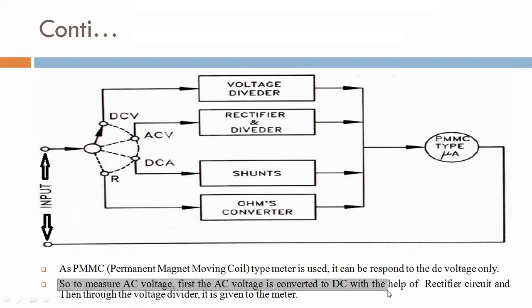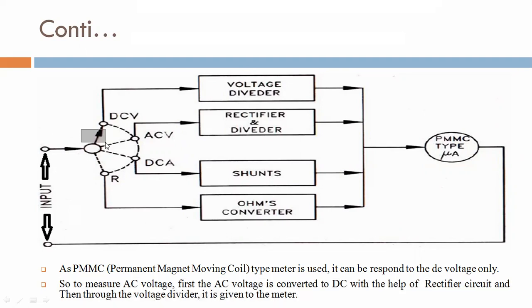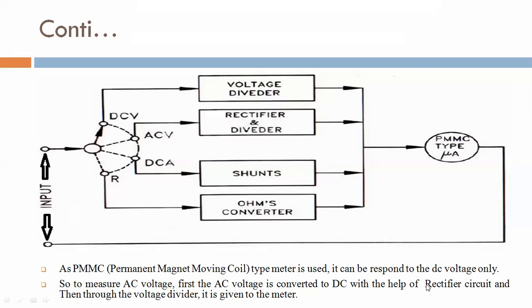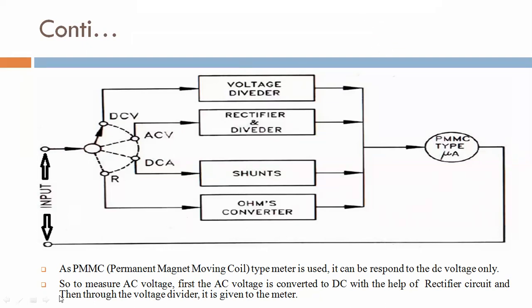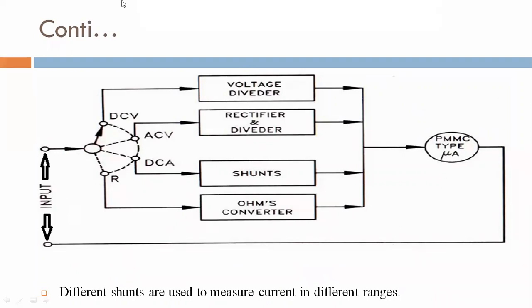To measure AC voltage: the AC voltage is first converted to DC with the help of a rectifier circuit, and then through the voltage divider it is given to the PMMC meter for display. By using this block, we are able to get the AC voltage reading.